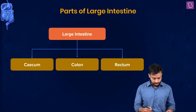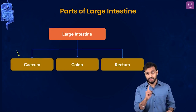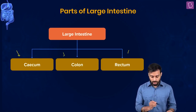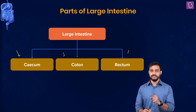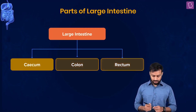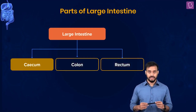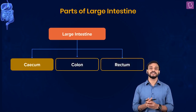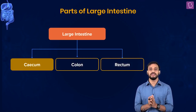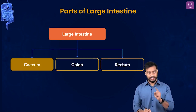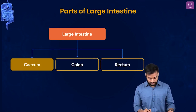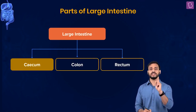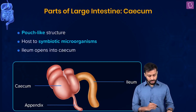The large intestine is divided into three major parts: the cecum - please note the spelling - the colon, and the rectum. We'll start by studying the cecum. There are a lot of terms here, but if you want to be doctors, we have to deal with this. Trust me, nothing will be too difficult.